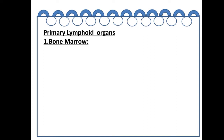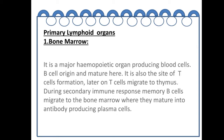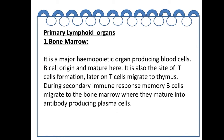The first primary lymphoid organ is bone marrow. It is a major hematopoietic organ producing blood cells. B cells originate and mature here. It is also the site of T cell formation, after which T cells migrate to the thymus. During the secondary immune response, memory B cells migrate to the bone marrow where they mature into antibody-producing plasma cells.